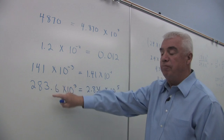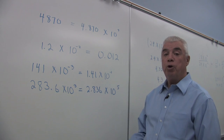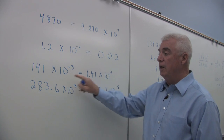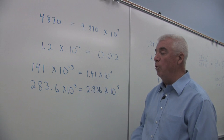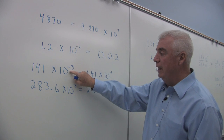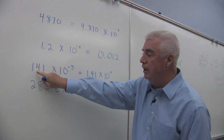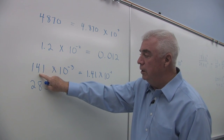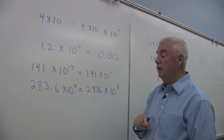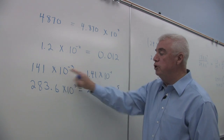Here I've listed two numbers that are in scientific notation but not in correct scientific notation — the decimal needs to be after the first digit. So let's fix the first one: 1.41 times 10 to the something. The original exponent indicates the true position is 3 places to the left. We've moved the decimal 2 places to the left, taking care of two of those three, which means the new exponent is 10 to the minus 1.